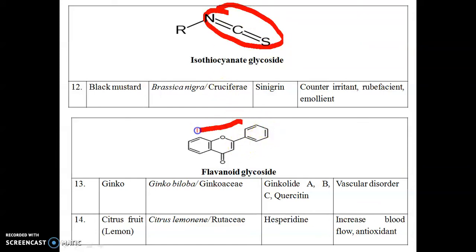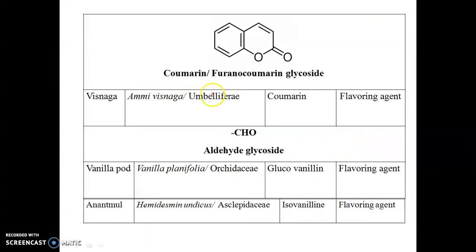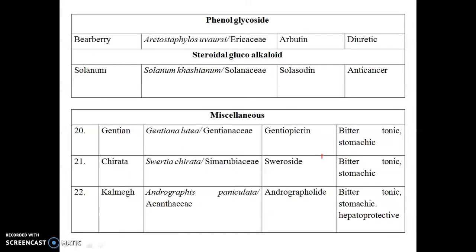Flavonoid glycosides are another important type, mainly present in citrus fruits; hesperidin is an example. Coumarin glycoside is present in visnaga. Aldehyde glycosides are found in vanilla. Other types include phenol glycosides, steroidal glucoalkaloids, and miscellaneous types such as those in gentian, chirata, and calamus. This concludes the classification of glycosides.